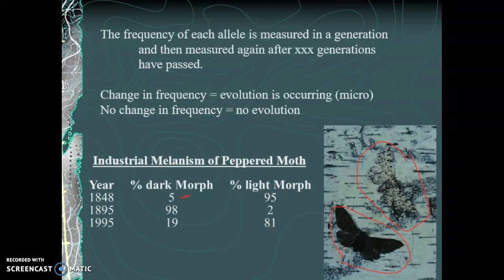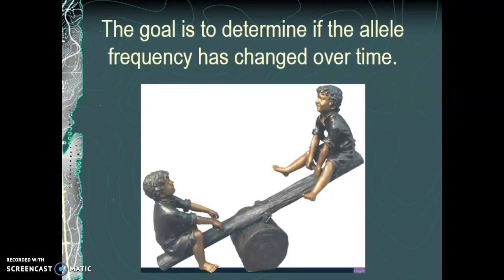That is a simple, quick example of microevolution — there are still moths, but we can see frequencies changing. If we watch for another 100, 200, or 3,000 years, there may be significant differences. In future lectures, we'll discuss how we know when enough change has occurred to call something a different species. The goal with Hardy-Weinberg is to determine if the allele frequency has changed over time — it's like watching a teeter-totter shift. That's what we're studying with microevolution.